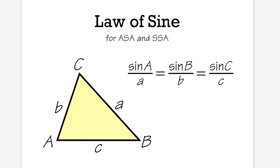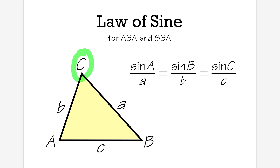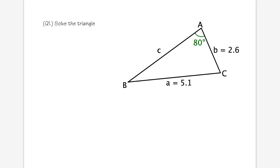The Law of Sines applies when we are given angle-side-angle or side-side-angle. The formula states: sine A over little a equals sine B over little b, which equals sine C over little c. Capital letters represent angles, and the corresponding lowercase letters represent the opposite sides.